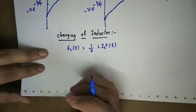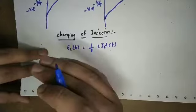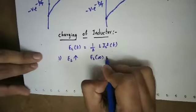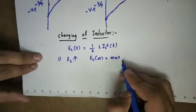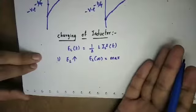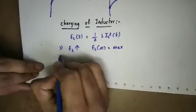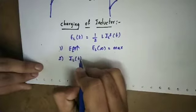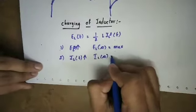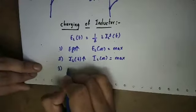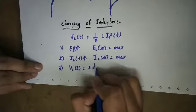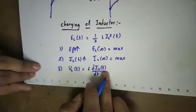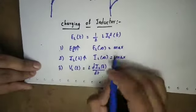Charging means the inductor is absorbing power. Energy will automatically increase. Energy will increase to a maximum at steady state. Current will increase and become maximum at infinity. Third point: voltage is L into d IL(t) divided by dt. Since it is an increasing function, the derivative k will be positive. So voltage will be positive during charging.